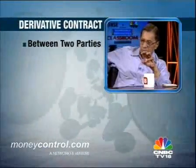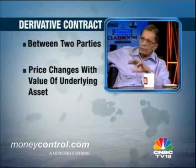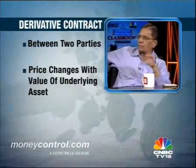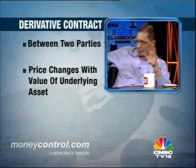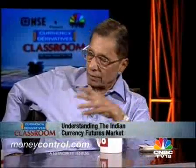The basic definition of a derivative contract is that it is a contract between two parties, but its value or price keeps changing with the value or price of the underlying asset. That is the basic definition of a derivative, whether it is a commodity derivative, a currency derivative, an equity derivative, or any derivative. As you know, equity derivatives have taken off extremely well in India. In fact, the equity derivatives market in India is one of the largest in the world.